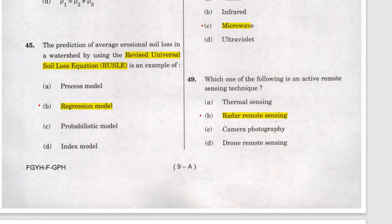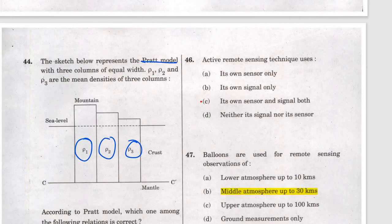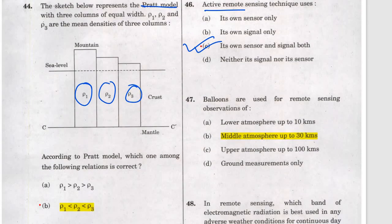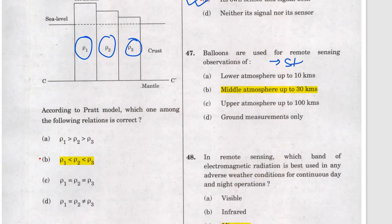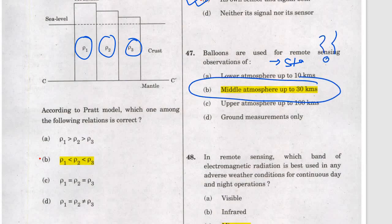Question 44 is a regression model for prediction of average erosion of soil by water. Question 45: active versus passive remote sensing — active sensors have their own source, while passive sensors use a natural source. The answer for inactive is c. Question 46: balloons used in remote sensing observations fly at approximately the stratosphere level — roughly 30 km. Please check this answer as I am not fully confident about it.